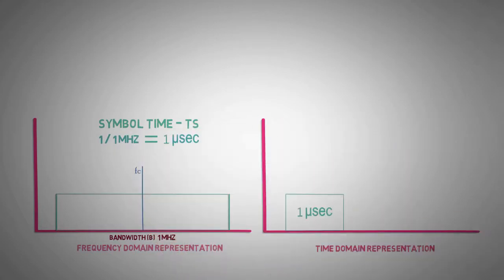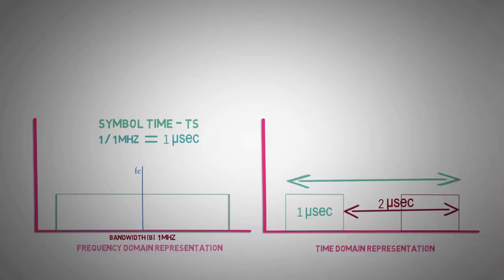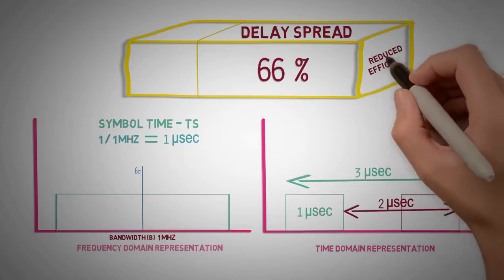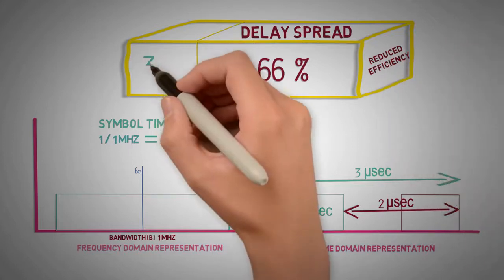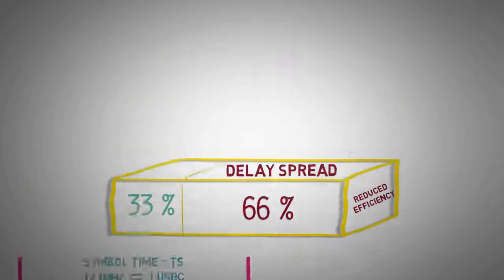Given that the delay spread of the channel is 2 microseconds, the combined symbol time would be 3 microseconds, which means delay spread occupies 66% of the combined symbol time, thus reducing the efficiency of the channel by 1 microsecond.